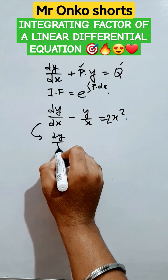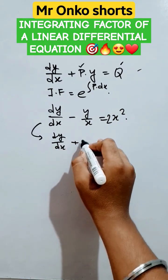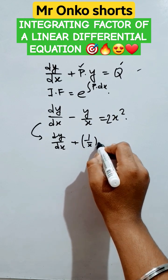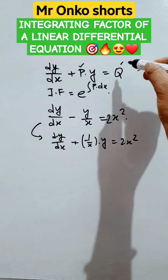Now study this function and convert it into this form. First of all, it is dy by dx plus of minus 1 by x into y equals 2x square. Here P is minus 1 by x and Q is this.